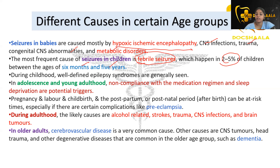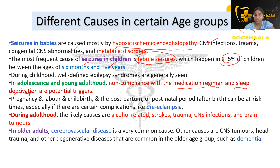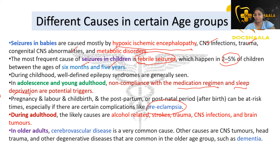In adolescence and young adulthood, non-compliance with medication regimens and sleep deprivation are potential triggers for seizures. During pregnancy, labor, childbirth, postpartum, and postnatal periods, there are very high-risk times for the mother to undergo seizures, especially with complications like preeclampsia. During adulthood, causes include alcohol abuse, brain stroke, trauma, CNS infections, and brain tumors.